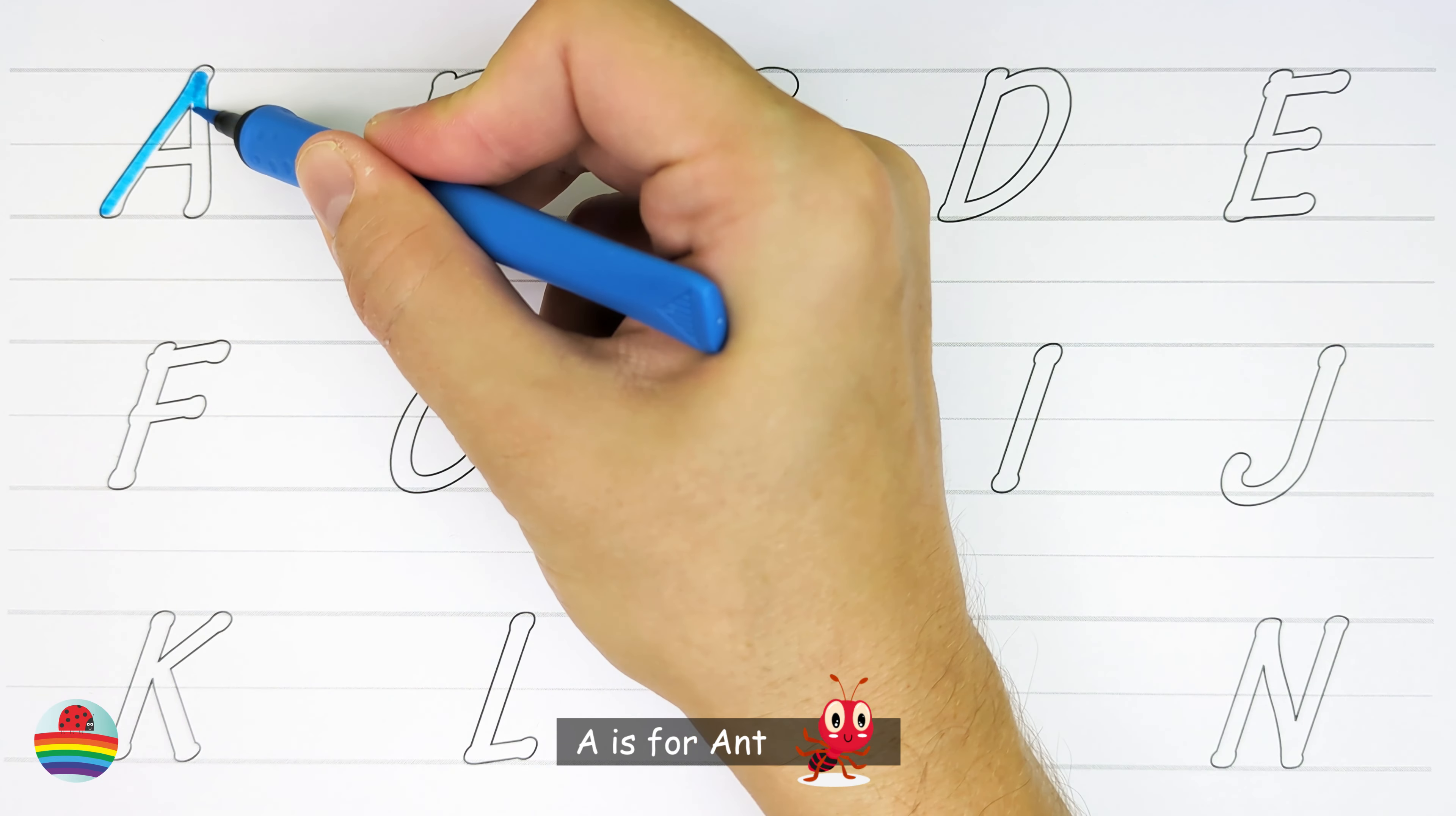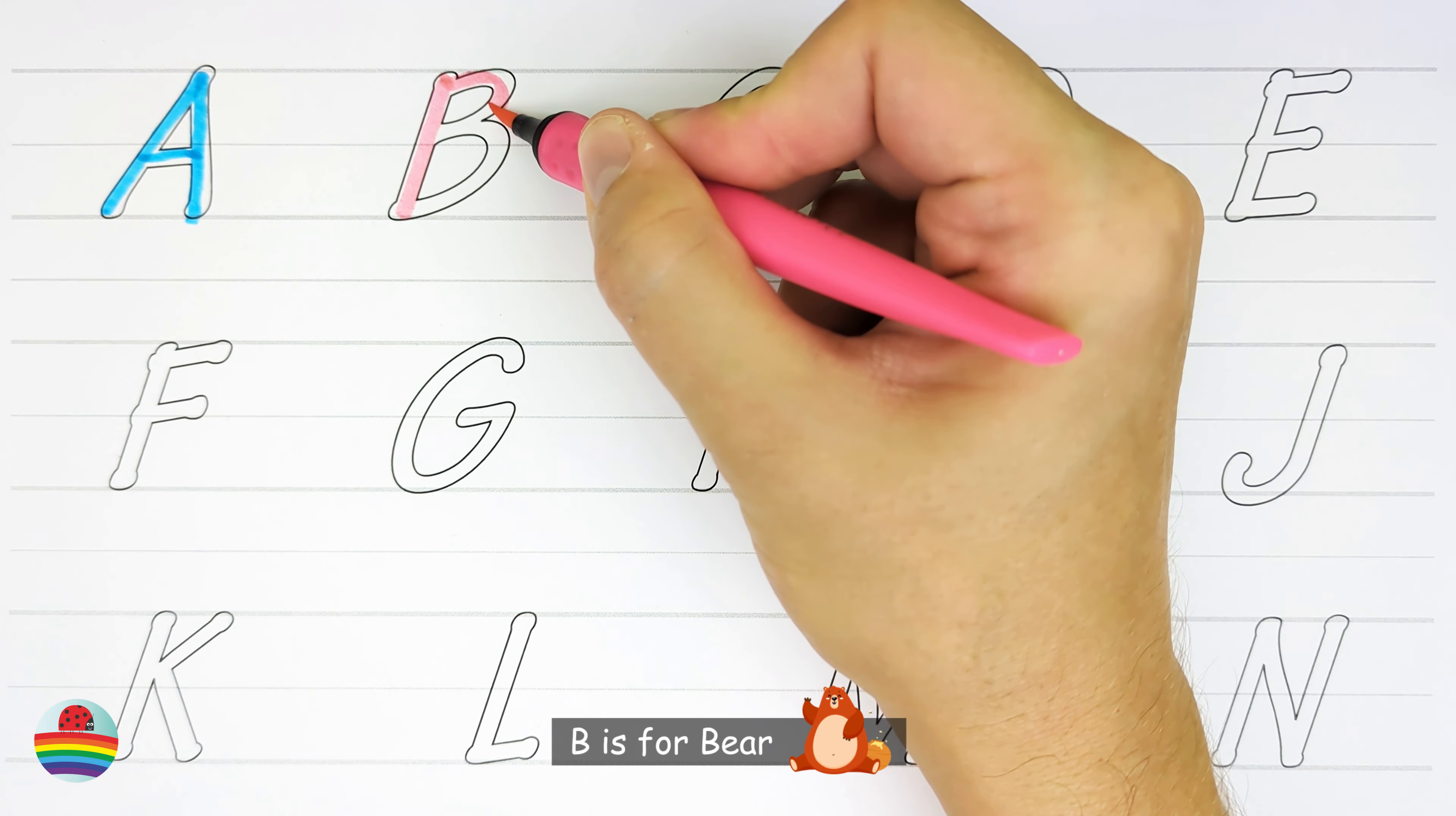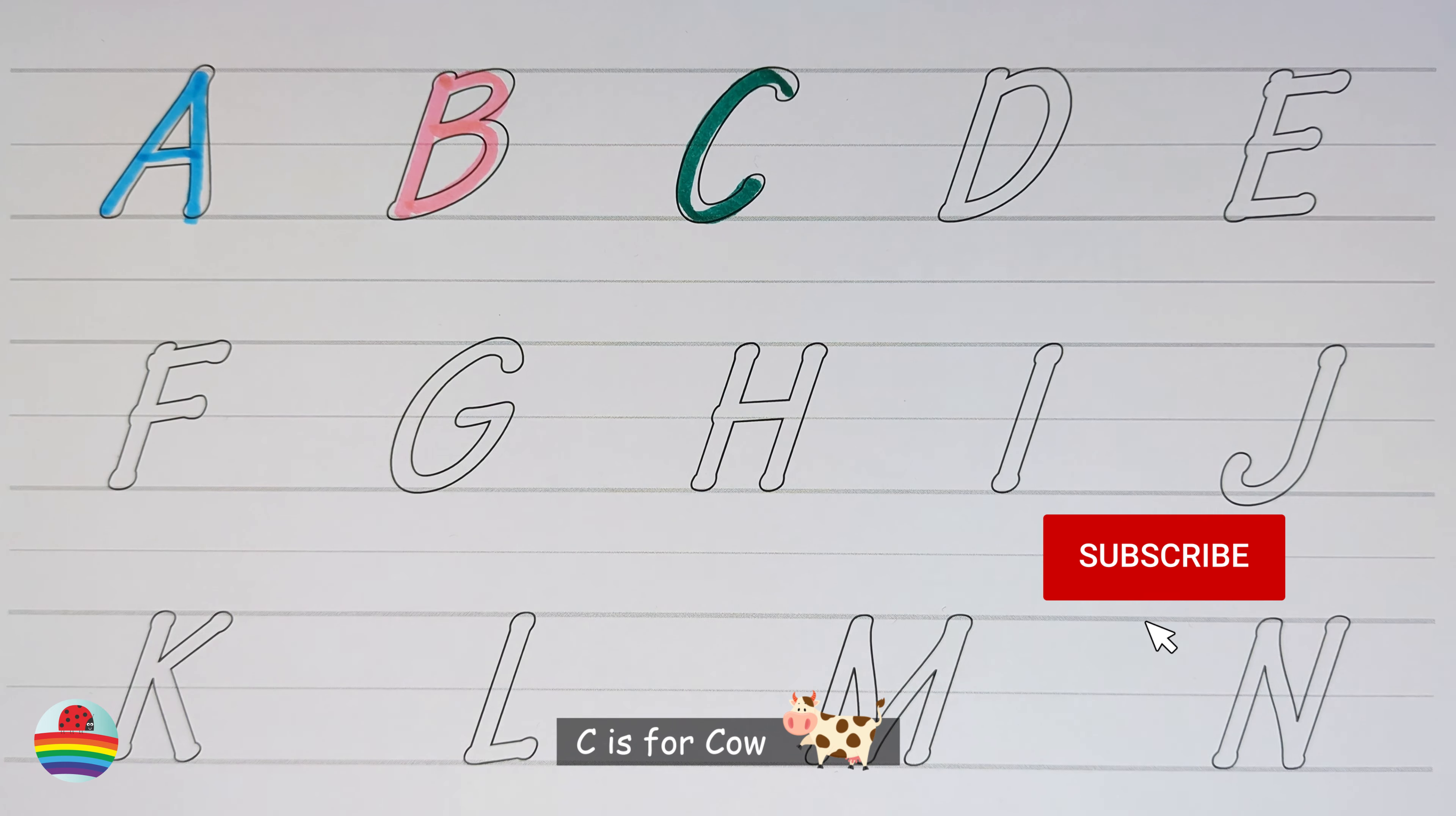A. A is for Ant. B. B is for Bear. C. C is for Cow.